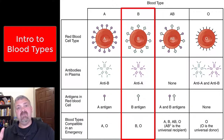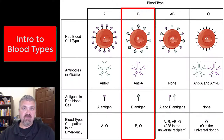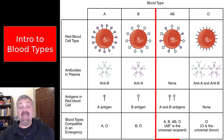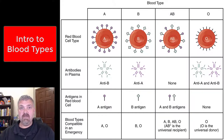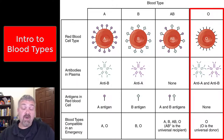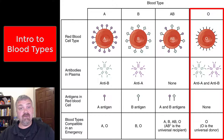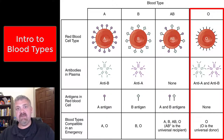If you have type B blood, you're going to have B antigens on the surface of your red blood cells and anti-A antibodies in your plasma. If you have type AB blood, you're going to have both the A and B antigens on your red blood cell surface, and you will not have any of these antibodies — anti-A or anti-B. We'll come back to why not. And then type O — there really isn't an O antigen. O is the absence of A or B, so if you don't have the A or B antigens on the surface of your red blood cells, you will have both the anti-A and anti-B antibodies in your plasma.